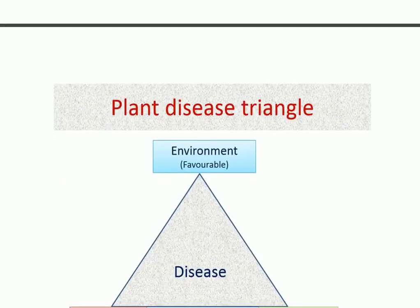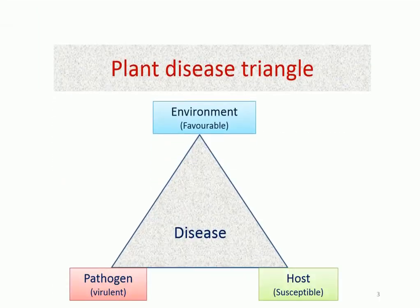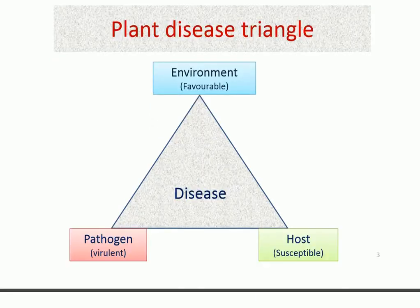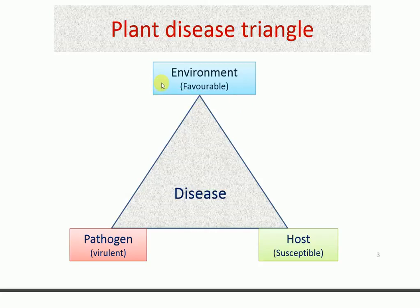Now let me show you how the disease triangle illustrates how plants get diseased. Here you can see the pathogen, which is virulent in nature, the environment, which is favorable for a desirable time, and the host, which is susceptible. If the pathogen is virulent and in abundance, and it gets the environmental conditions according to its need — in favorable conditions for a desirable time — then the growth cycle is completed.